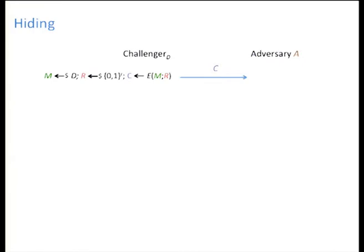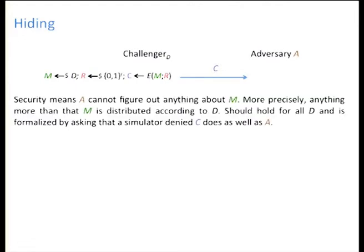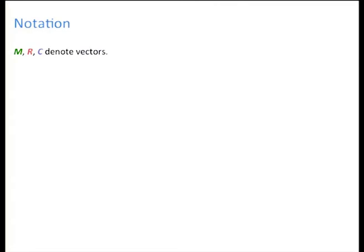Selective open security is a strong form of hiding, so we will begin by recalling in more detail the standard hiding definition. There should be some message distribution, and the security guarantee is that the adversary cannot figure out anything about the message other than what is implied by the message distribution itself. This is a semantic security style definition, formalized by asking that there should be a simulator that does not see the ciphertext but does as well as the adversary.